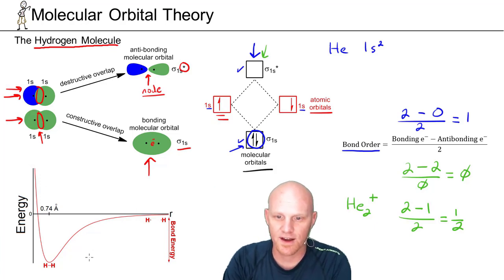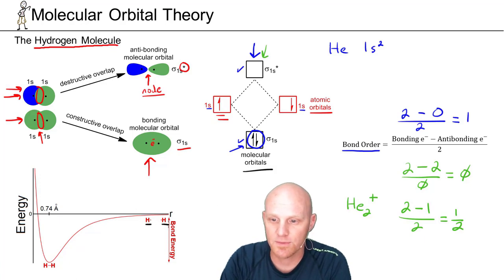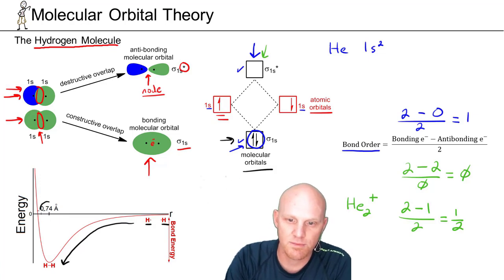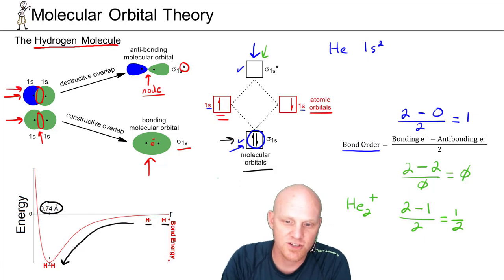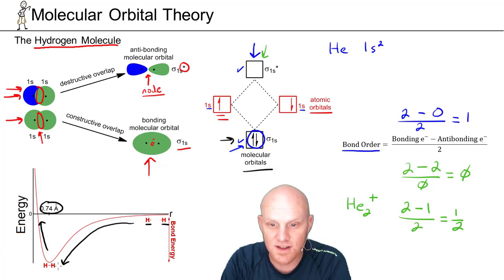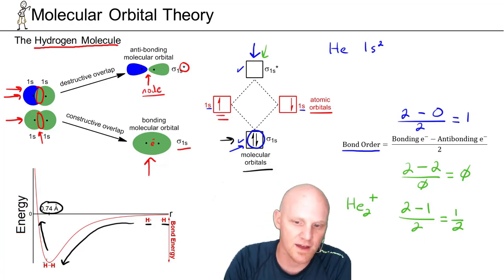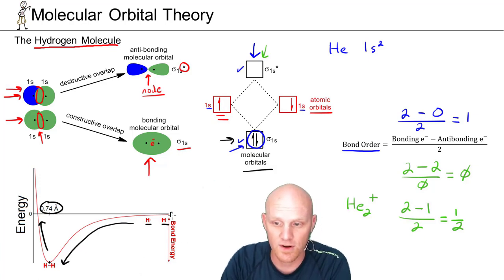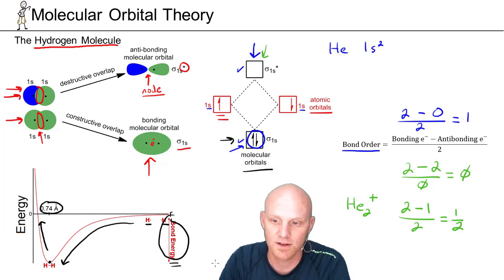As two hydrogen atoms get closer together and their orbitals overlap, the electrons going into the bonding molecular orbital lowers the energy up to a point — the mean bond length, which is 0.74 angstroms for molecular hydrogen. Getting closer than that point causes significant nuclear repulsions that raise the energy significantly. There is a Goldilocks closeness: you want them close, but not too close. That difference in energy between two totally separate atoms and the mean bond length is called the bond energy — it takes energy to break a bond, but you release energy when you form a bond.